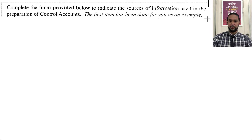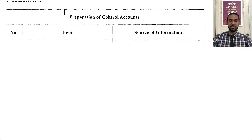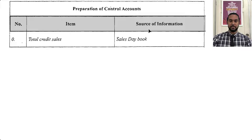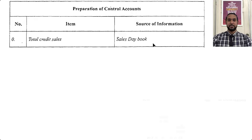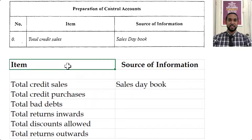This is part B of the question. It says complete the form provided to indicate the sources of information used in the preparation of control accounts — the first item has been done as an example. We have number, item, and source of information. In the first instance it says total credit sales, which comes from the sales daybook or the sales journal. I've summarized the wording in the item column to save space.